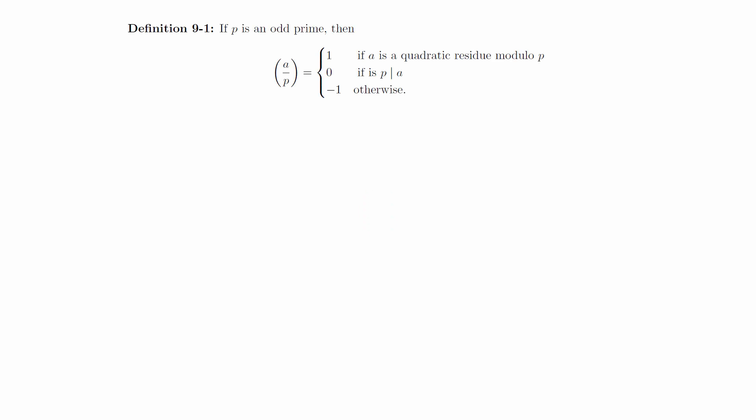If p is an odd prime, then a on p is equal to 1 if a is a quadratic residue modulo p, it's 0 if p divides a, and negative 1 otherwise.